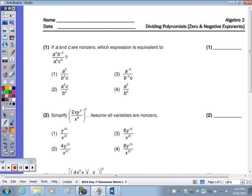Okay, number one. It says that if a and c are non-zero, which expression is equivalent to a to the fourth b to the negative third divided by a squared c to the zero?